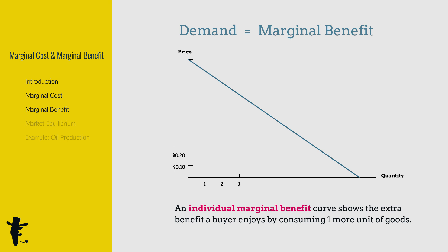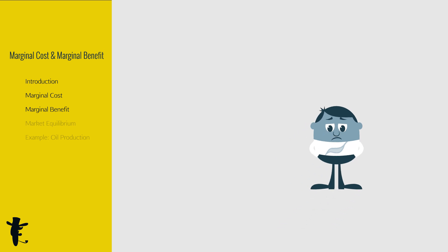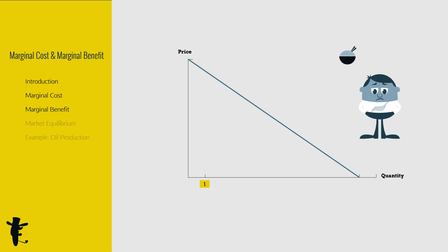An individual marginal benefit curve tells us the extra benefit a buyer enjoys by consuming one more unit of goods. Imagine you are super hungry and consume the first unit of rice. Brilliant! What about the second unit of rice? Great!